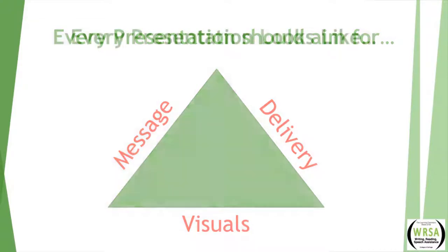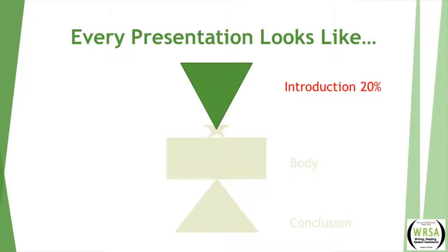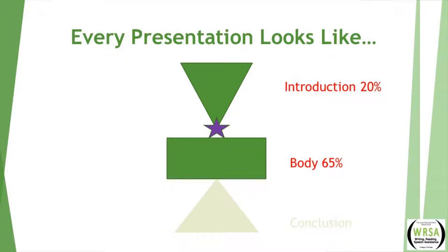In review, we would like every presentation to look like this. The introduction is an inverted triangle and is about 20% of your speech. It starts with a very broad attention getter and then narrows your focus that leads to the star, which is your thesis sentence or your controlling idea. Following that is the body, which is about 65% of your speech. And concluding is the 15% of your speech which does a short review, perhaps talks about significance, but ends on a high note with some sort of clincher.